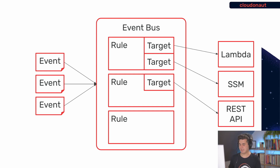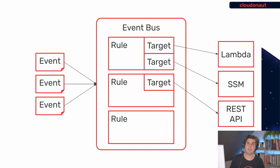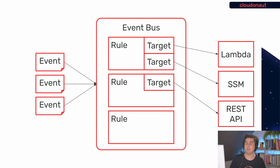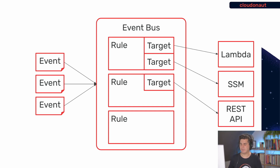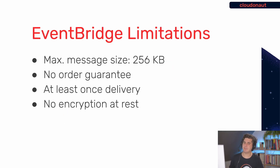For example, a target could be a Lambda function, you could invoke an SSM action, or call an API Gateway REST API. There are lots of target types available. That is EventBridge in a nutshell. Lots of AWS services publish events to EventBridge — and by the way, EventBridge was formerly known as CloudWatch Events. You'll get all kinds of events by default that AWS publishes, like health events, CloudTrail events, and many other events, as lots of services integrate into EventBridge.